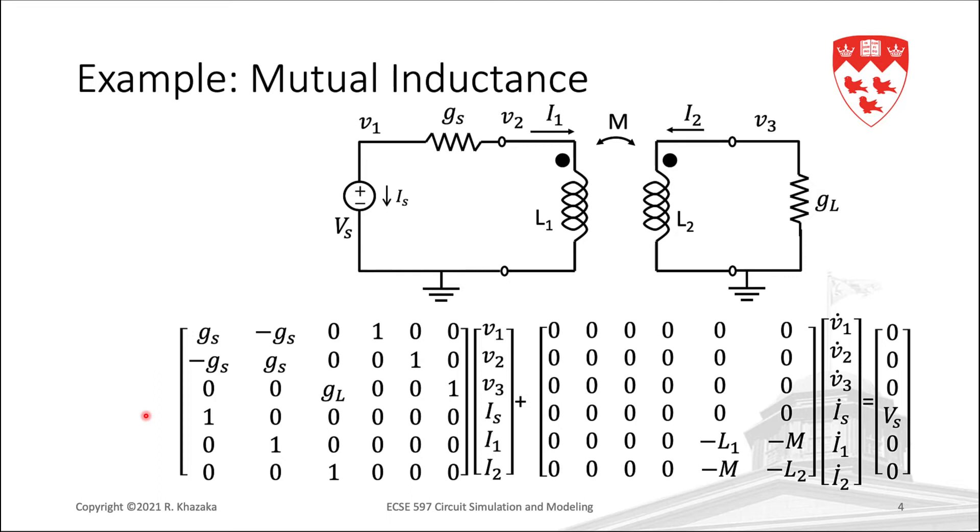The stamp would then consist of a 1 in row 1, column 4, which is essentially adding the current Is to the KCL equation at node 1, and a 1 in row 4, column 1, which, along with the Vs in the right-hand side vector, is telling us that V1 equals Vs.